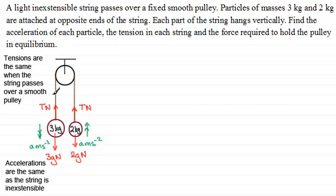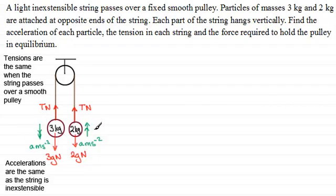We're dealing with a light inextensible string. The reason it must be light is that if the string were not light, as the 3 kilogram particle moves downwards, there would be more weight in the string on one side of the pulley, causing the effective masses on either side to keep changing. So a light string ensures the masses remain constant. That's the typical diagram we draw when finding accelerations and tensions.